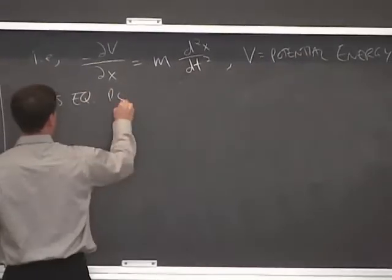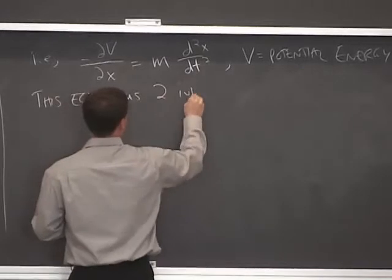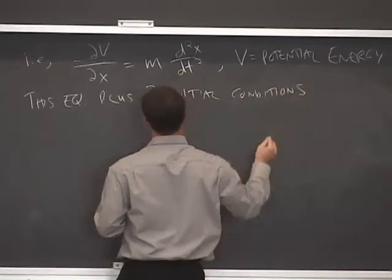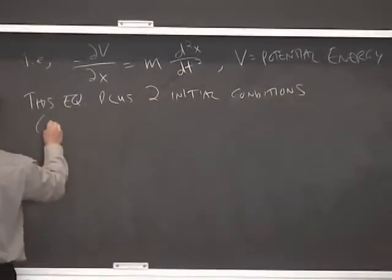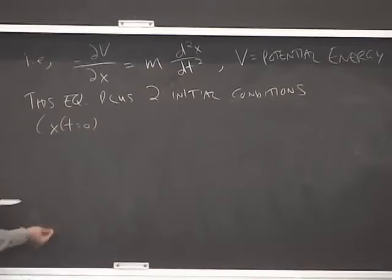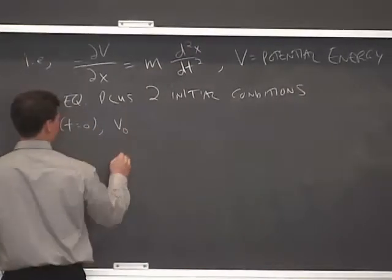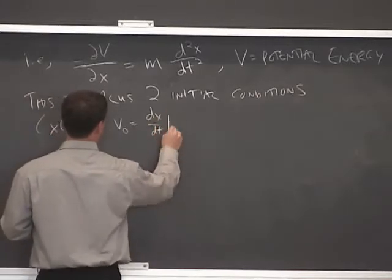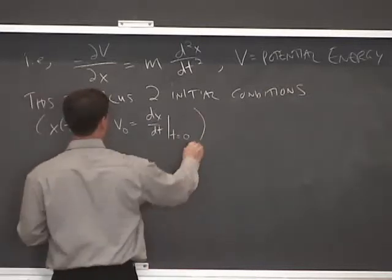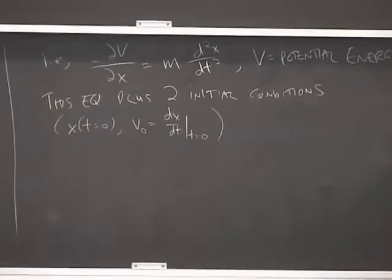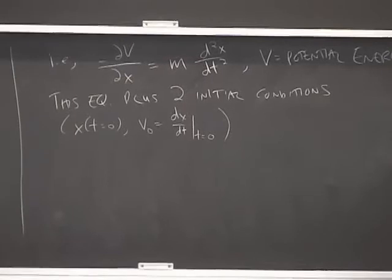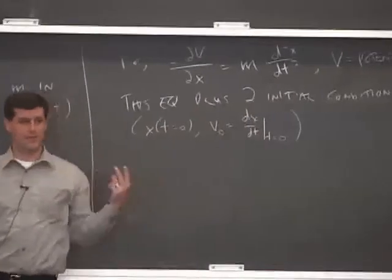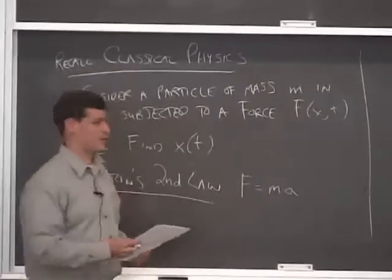So this equation, Newton's second law, plus two initial conditions, which will typically be the position x at t equals zero, the initial position, and the velocity at t equals zero, that is the first derivative of x with respect to time at t equals zero. If we have this equation and two initial conditions, then we can uniquely determine x for all future values of time. We can see that just by inspection of the differential equation. It's a second-order differential equation, so you need two boundary conditions to solve a second-order differential equation.